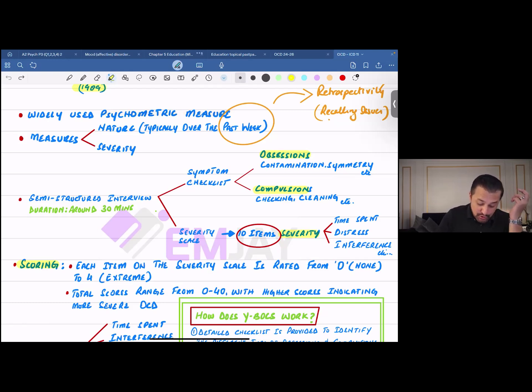Taking it ahead, what does it measure? It measures the nature, typically the nature of your symptoms, and at the same time the severity of your symptoms. The symptoms you've had in the last week - remember there could always be retrospectivity or recalling issues. So that's a weakness. Number two, the severity of these symptoms is also measured.